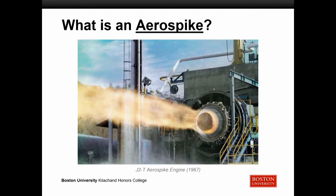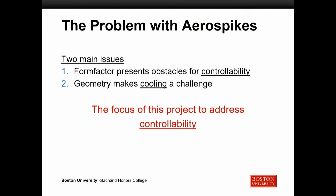Here's a quick image of an aerospike firing from the 1960s. Despite being this fancy type of rocket engine nozzle with significant efficiency gains, aerospikes have almost never been used to get anything into space. That's due to two main issues: number one, their form factor presents obstacles for controllability, and two, their geometry makes cooling a challenge. The focus of our project is that first issue — the controllability aspect.